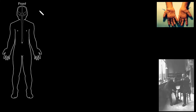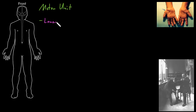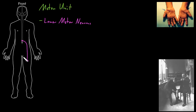In this video, I'm going to talk about the motor unit. The motor unit is made up of a couple of parts. The first part are what are called lower motor neurons. These are efferent neurons of the peripheral nervous system, meaning that they're carrying information away from the central nervous system. These efferent neurons synapse on and control skeletal muscle.